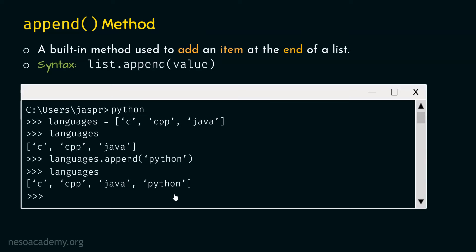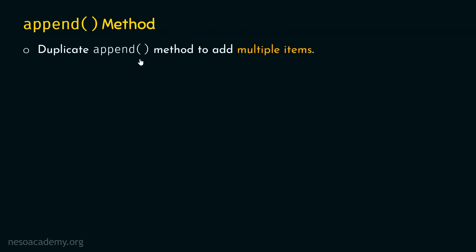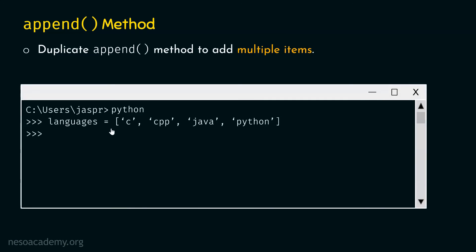We can also add multiple items using the append method. If we want to add multiple items, we duplicate the append method as many times as needed. For example, if the requirement is to add three items, we must use append method three times. Let's start with our updated list: languages = ['C', 'Cpp', 'Java', 'Python'].